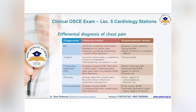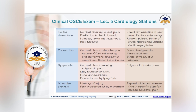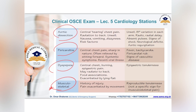The differential diagnosis for chest pain includes: myocardial infarction, angina, pulmonary embolism, pleurisy, pneumothorax (rare in medical cases), aortic dissection, pericarditis, dyspepsia, and musculoskeletal — which is the most common cause in young patients.